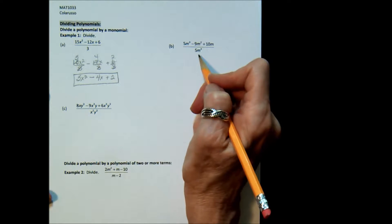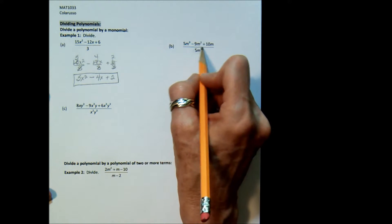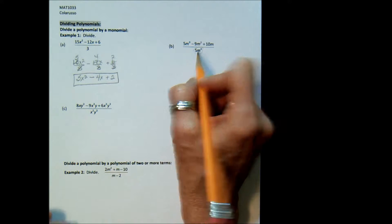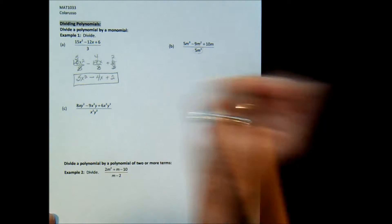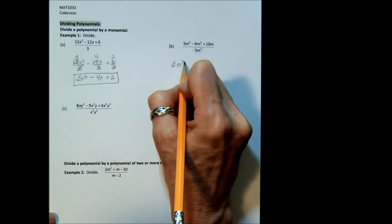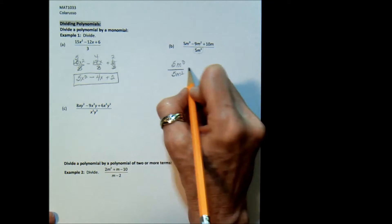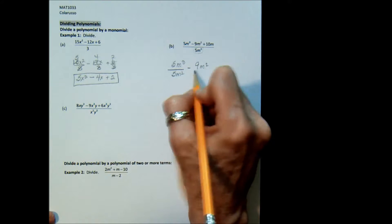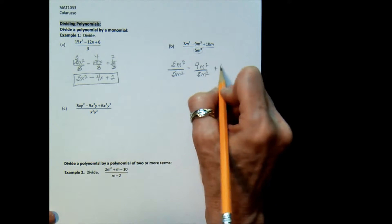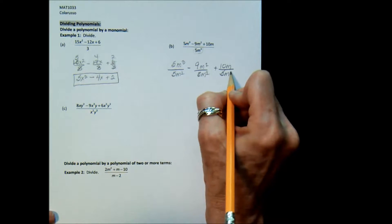Let's look at the second one where we have a variable in the denominator. I still just have a monomial in my denominator, so I'm going to split my fraction into three smaller ones: 5m³ over 5m², minus 9m² over 5m², plus 10m over 5m².